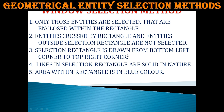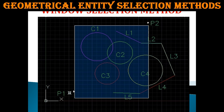The selection rectangle is drawn from the bottom-left corner to the top-right corner. The four lines forming the selection rectangle are solid in nature. The area within the rectangle is filled in blue color, which helps identify that the window selection method is being used.